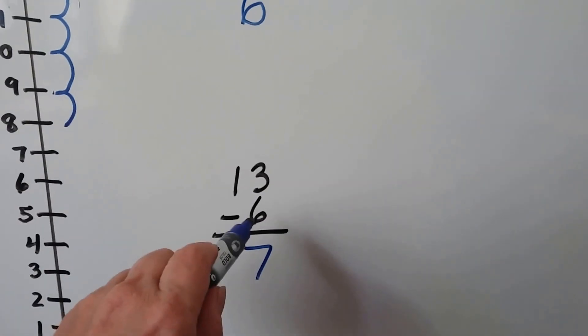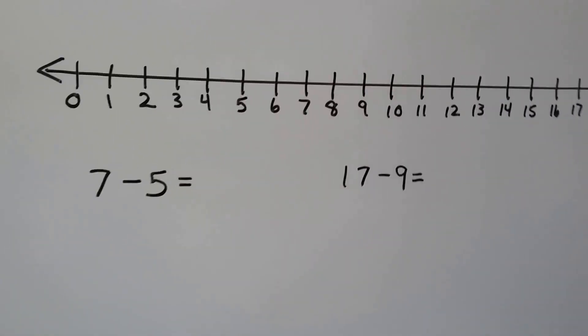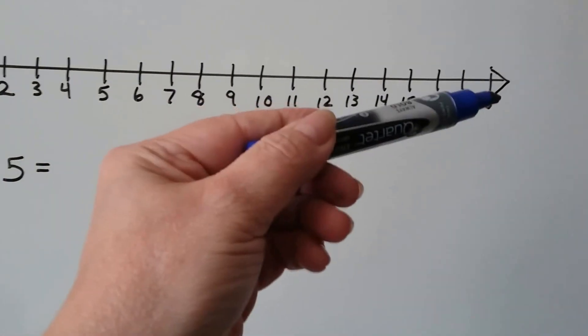See? We start with the subtrahend and count up to the minuend. We can even do it with a number line going horizontally from 0 to 18.